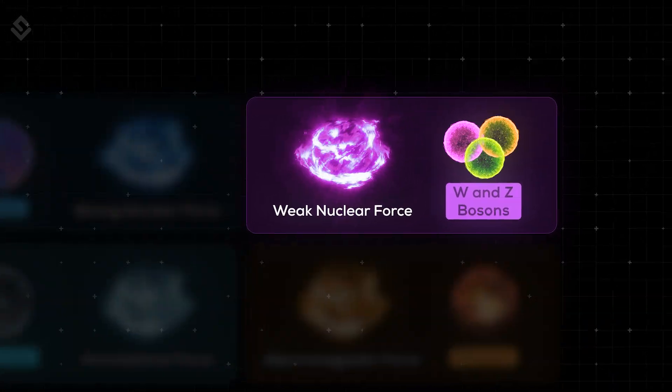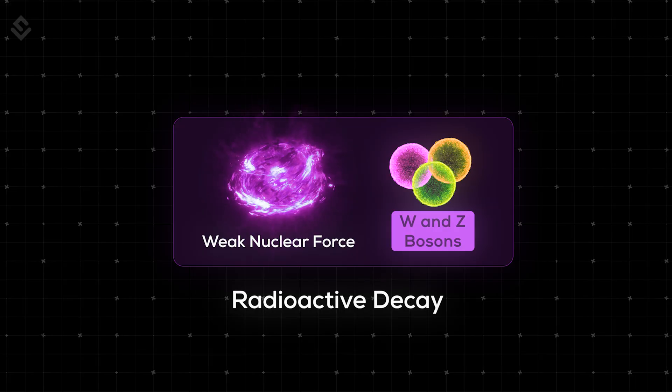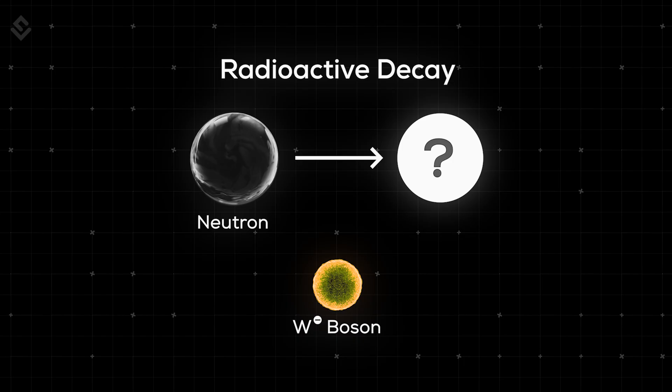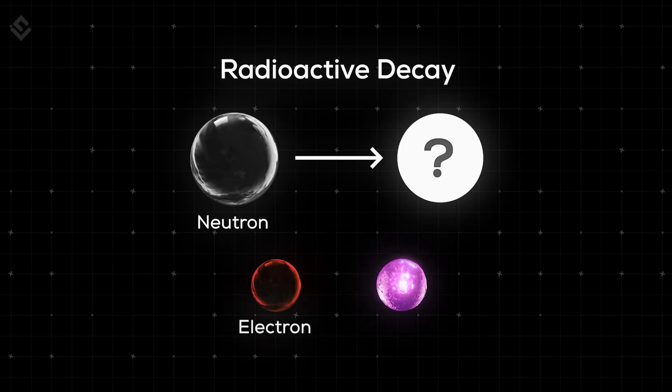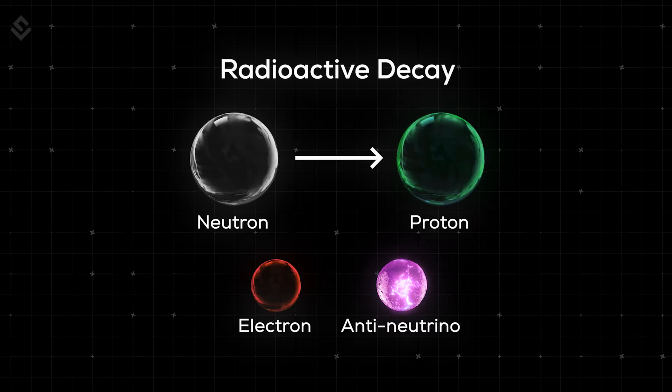By the way, the weak nuclear force is responsible for radioactive decay in materials. When a neutron decays, it gives away a particle called W boson. The W boson then quickly decays into an electron and an anti-neutrino. Now, since the neutron loses a negative charge in form of an electron, it turns into a positively charged proton.